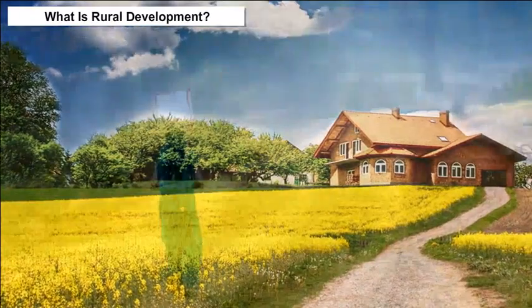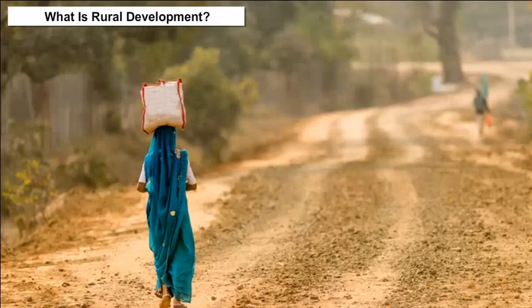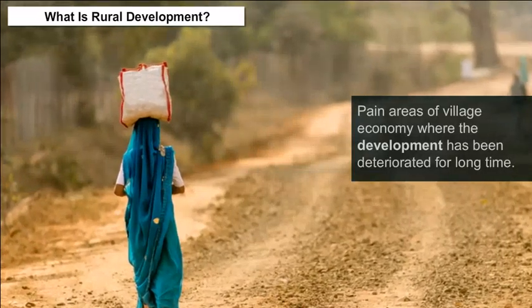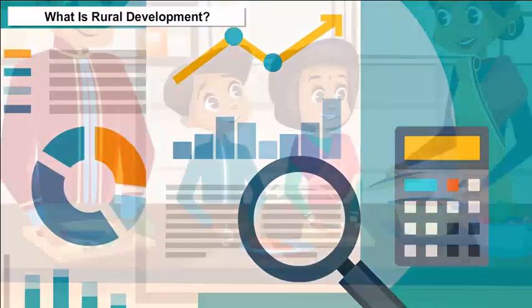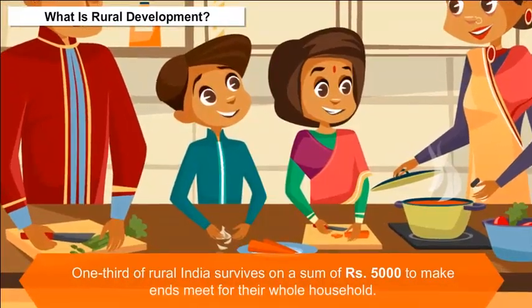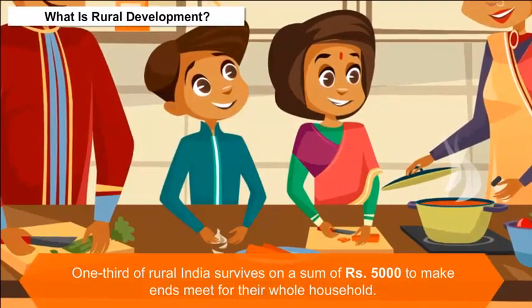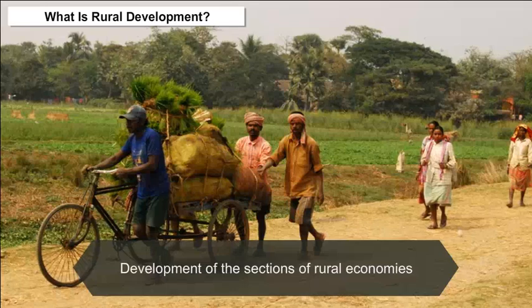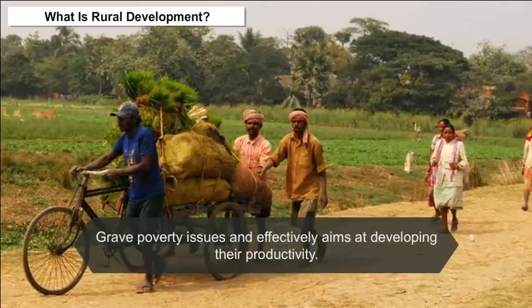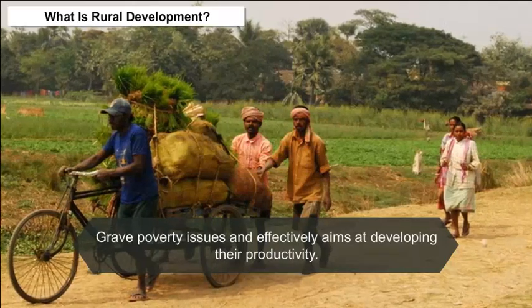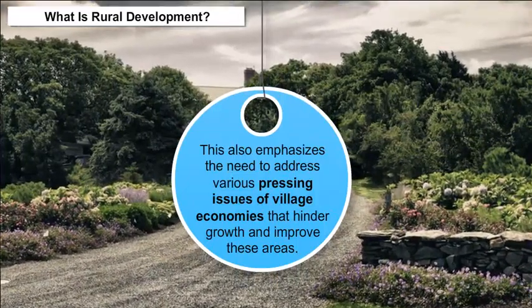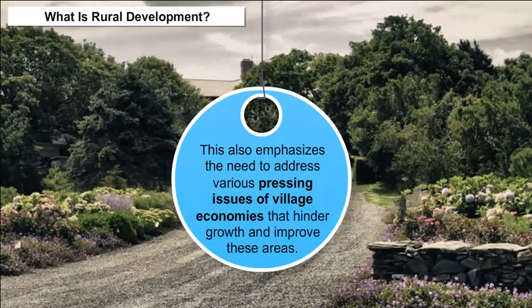Rural Development is an all-inclusive term that looks into those main areas of village economy where development has been deteriorated for a long time. According to the census of 2011, about one-third of rural India survives on a sum of rupees 5000 to make ends meet for their whole household. This concept focuses upon the development of sections of rural economies that experience grave poverty issues and effectively aims at developing their productivity, also emphasizing the need to address various pressing issues that hinder growth.